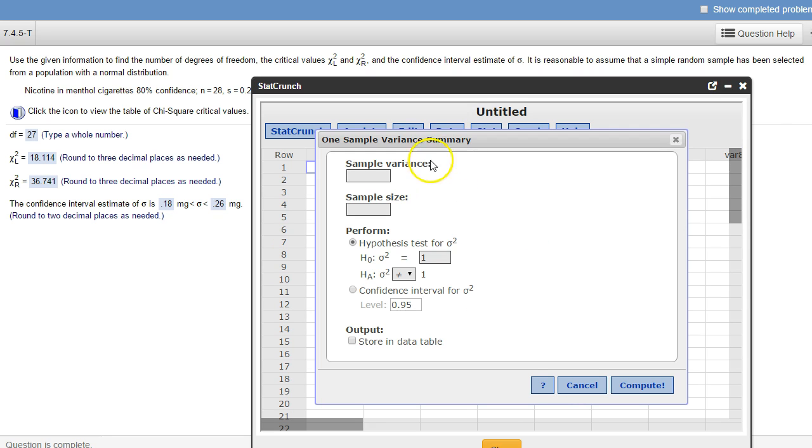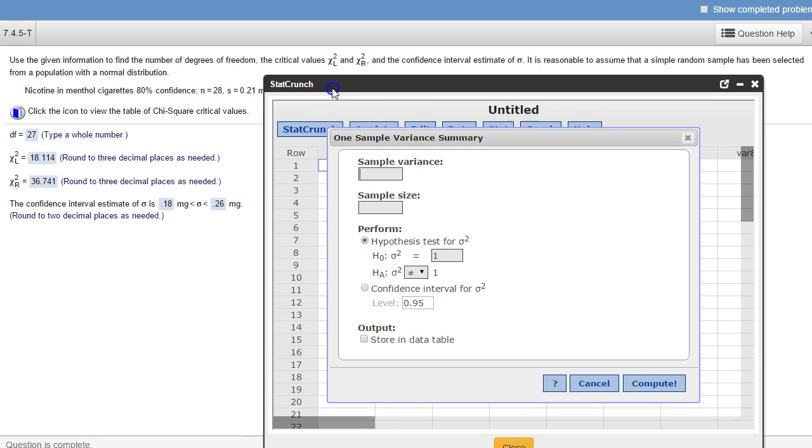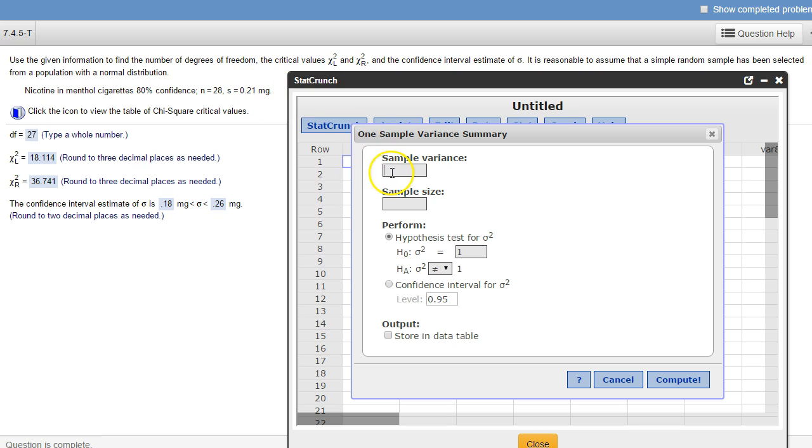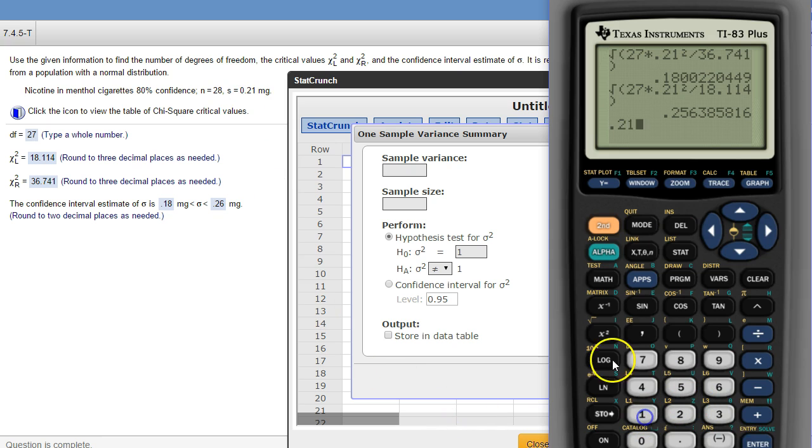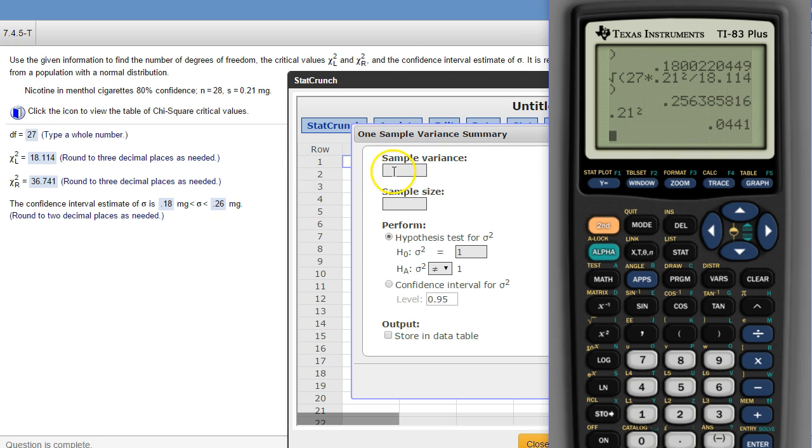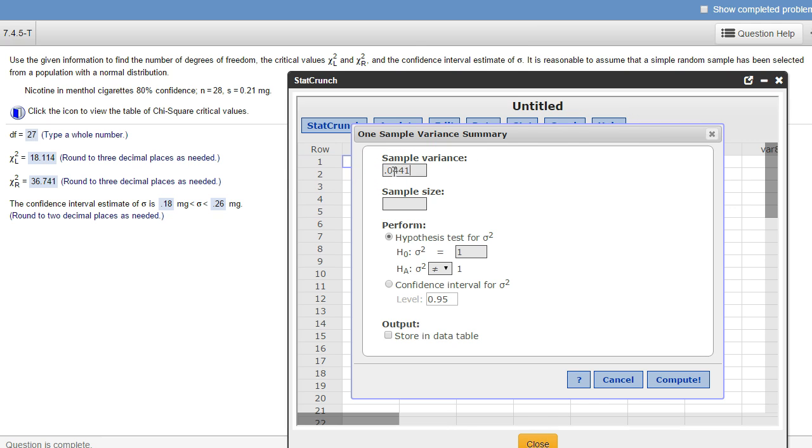With summary. So sample variance—variance is the square of standard deviation or standard deviation is the square root of variance. So to give it sample variance we have to take our standard deviation and square it, so there's the sample variance 0.4441. The sample size, now we're back to just the sample size and not the degrees of freedom. We don't want a hypothesis test, we want a confidence interval. I want the level to be 80 percent, so 0.8, and then we tell it to compute.